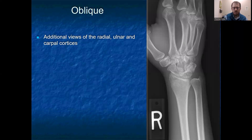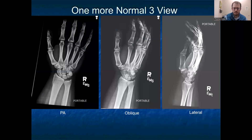The last of the typical three views is an oblique. This is an additional view of the radial, ulnar, and carpal cortices so you can pick out subtle irregularities that might not show up on your initial two-view. Note that films that are overexposed or have incomplete overlap of the radius and ulna on the lateral are not true laterals.